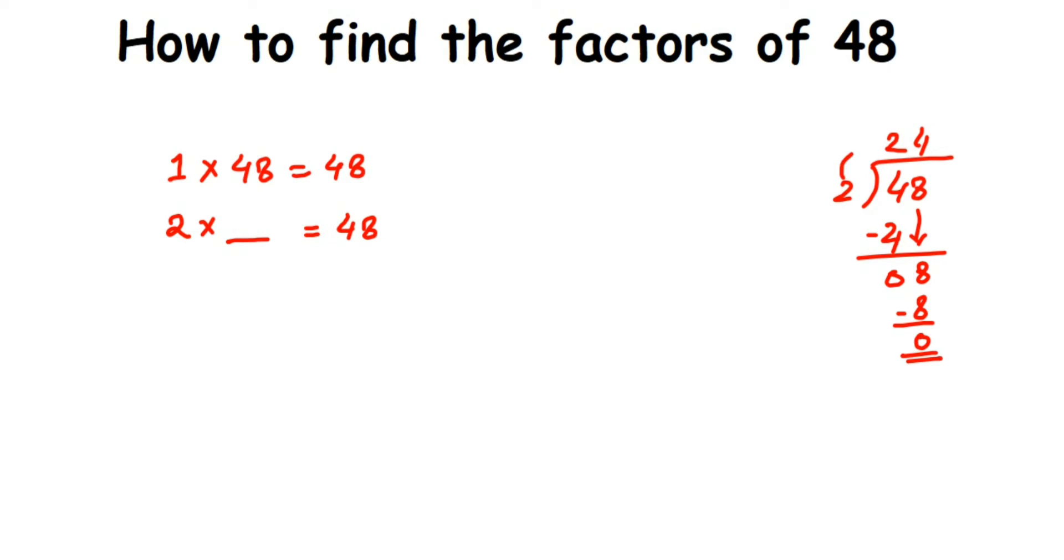This means that 48 goes into 2 table and 2 × 24 = 48. So 2 multiplied by 24 gives 48. Similarly, let's check with 3 table.